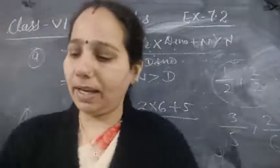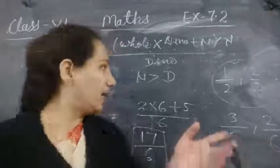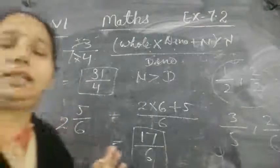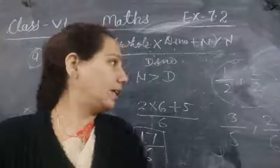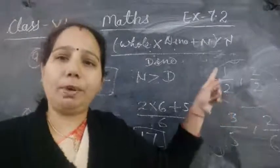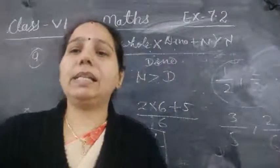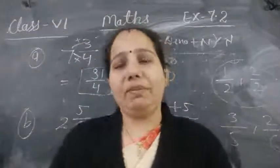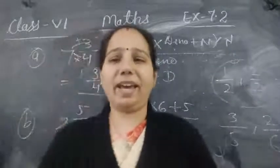In this video we learned: mixed fraction — which has one whole number along with a numerator and denominator; proper fraction — where the numerator is less than the denominator; and improper fraction — where the numerator is greater than the denominator. I hope you all understand clearly. We will meet again in our next video. Till then, bye bye. Have a nice day. Thank you.